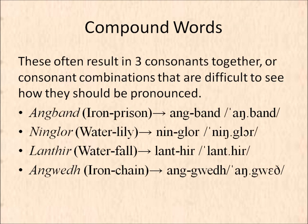Compound words can be a little bit tricky because they often end up with three consonants together in between the vowels. It can be difficult to figure out where to put each consonant, and where they go depends on which word they belong to. In the homework, I will mark the morpheme boundaries for you. Unfortunately there's no way to really know this until you have learned what the words mean. Some examples are Angvand, Ningor, Lanthir, and Angwe.